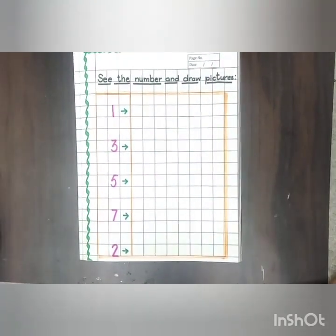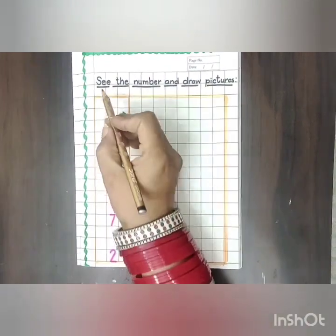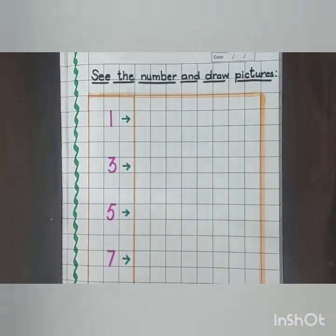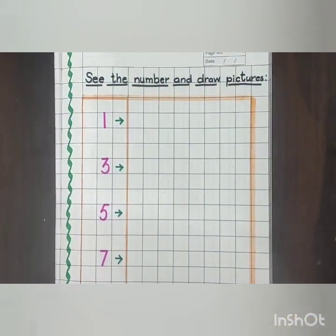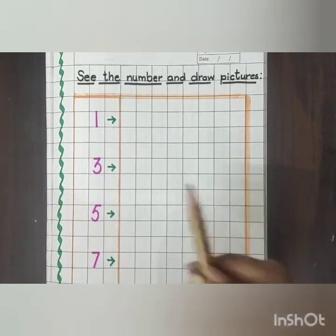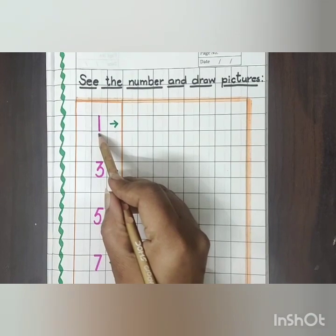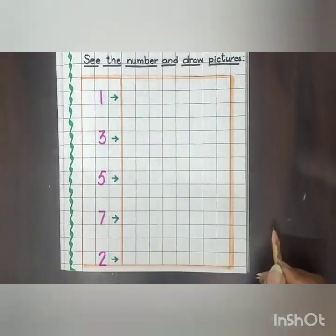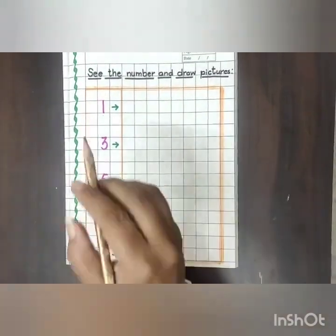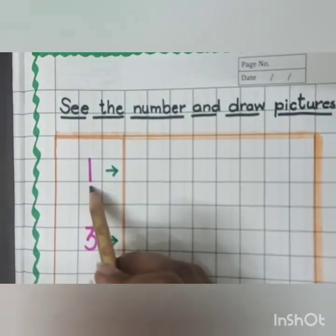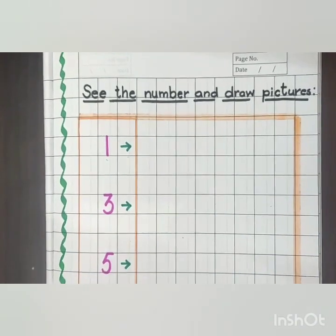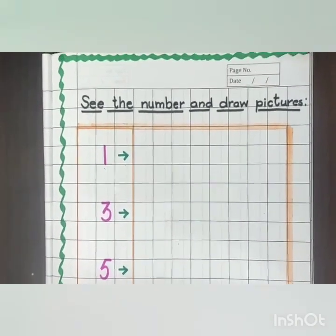Good morning my dear kids, our today's topic is see the number and draw pictures. In this worksheet, at first you have to see the number carefully and then you have to draw pictures according to the given number. See, this is number one, so I will draw one picture. You can draw any picture of your own choice.